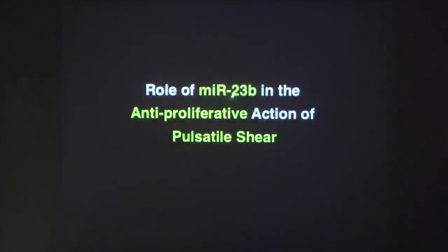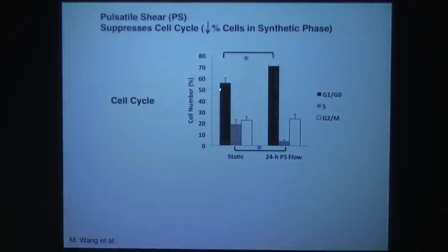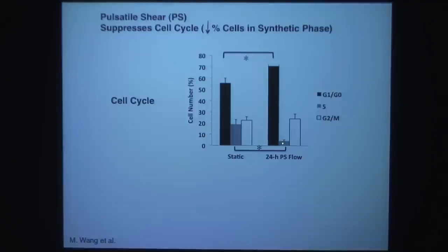In our lab we have studied several microRNAs. I will show two. The first is microRNA-23b in the anti-proliferative action of pulsatile shear. In static conditions, S-phase synthesis is elevated, but with pulsatile shear it drops substantially — pulsatile shear is anti-proliferative. Similarly, laminar shear decreases BrdU uptake, indicating decreased proliferation.